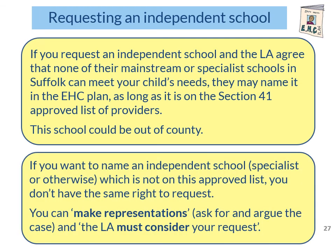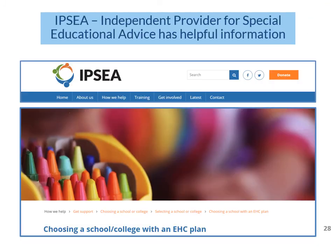However, if you want to name an independent school — specialist or otherwise — which is not on the approved list, you don't have the same right to request. Instead, you can make representations: this means you can ask for and argue the case, and the local authority must consider your request. IPSE, the Independent Provider for Special Education Advice, has some helpful information about making representations for an independent school which is not on the approved Section 41 list of providers.